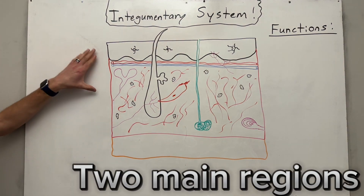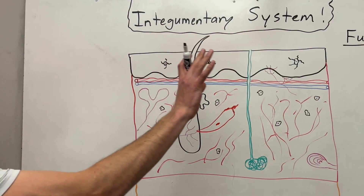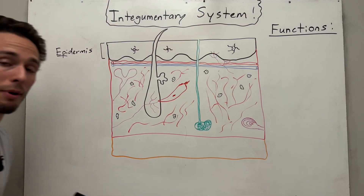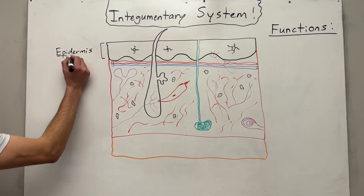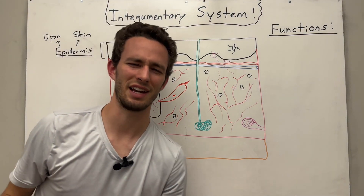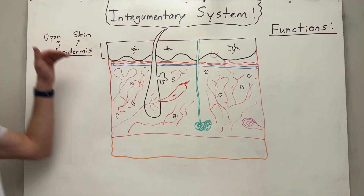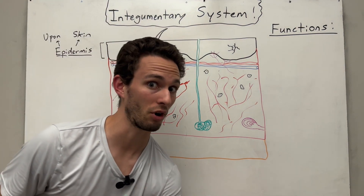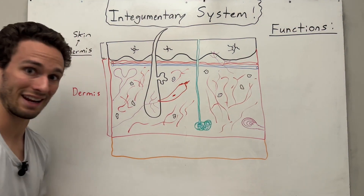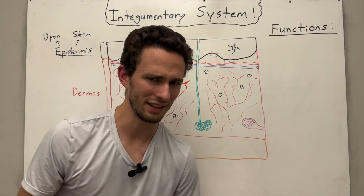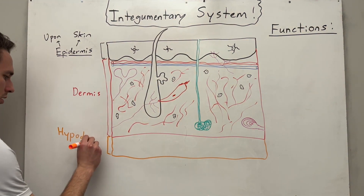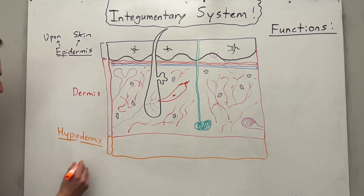The skin is divided into two main regions. The top region, designated in black, is called the epidermis. Now, epi refers to upon or on top of something, and dermis literally means skin. So right underneath it will be the dermis, the main part of the skin. And right underneath the dermis is called the hypodermis, which means below the dermis.